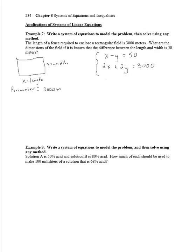Since we have a negative y, let's just multiply the first equation by 2. So we have 2x minus 2y equals 100. And the second equation stays the same. So 2x plus 2y equals 3,000. And when we add them together, we get 4x equals 3,100. Or x equals 775 meters.